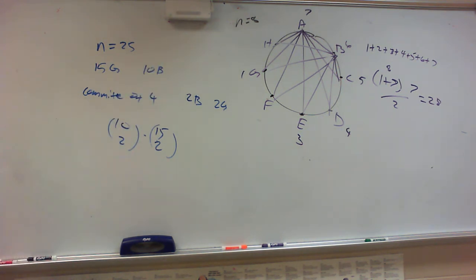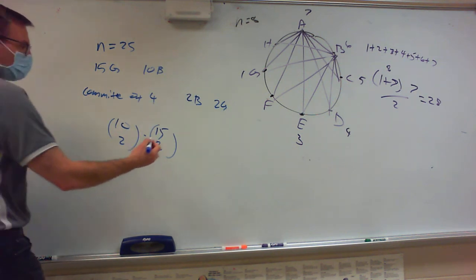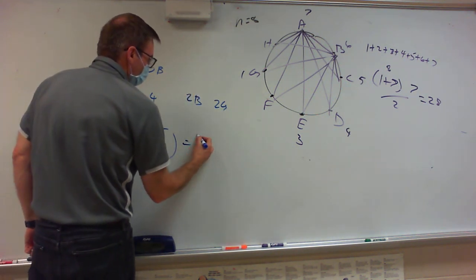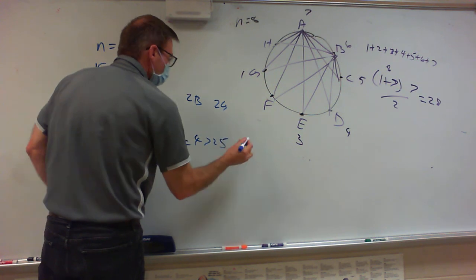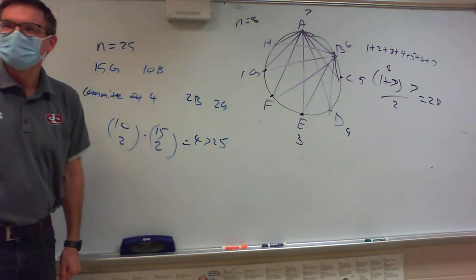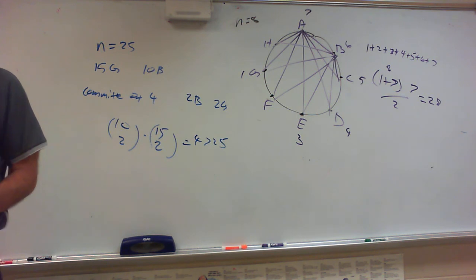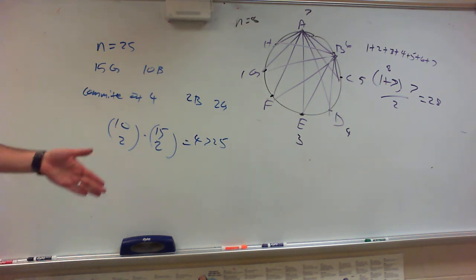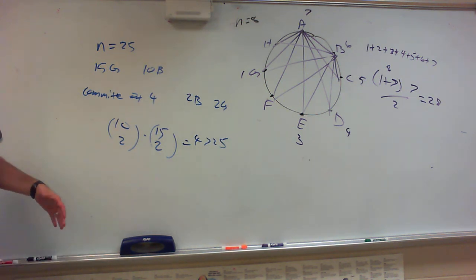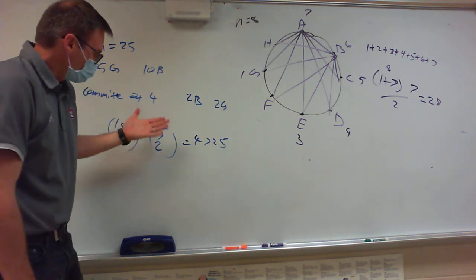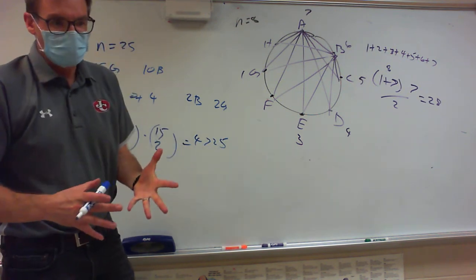The result is 4,725. So when order doesn't matter, that's the number of ways to form a four-person committee with exactly two boys and exactly two girls from a class of 25 students.